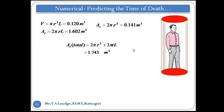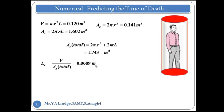The next step is to find the characteristic length and the Biot number. Once we know the Biot number we can determine whether lump system analysis is applicable. The characteristic length is volume divided by total area: 0.120 divided by 1.743 gives a characteristic length of 0.0689 meter.